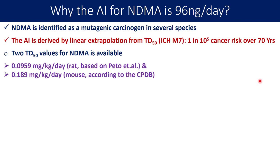The CPDB database is the Carcinogenic Potency Database for substances. If you are looking for the acceptable intake for a newly identified nitrosamine, don't forget to look into this database, because it is quite extensive in nature and TD50 values are available for many such compounds.